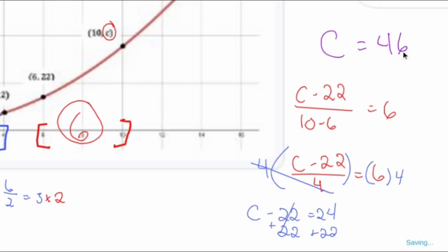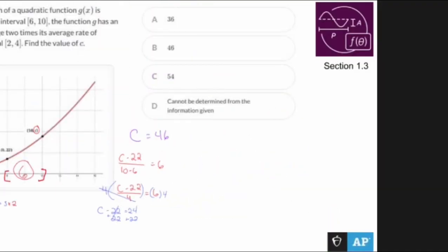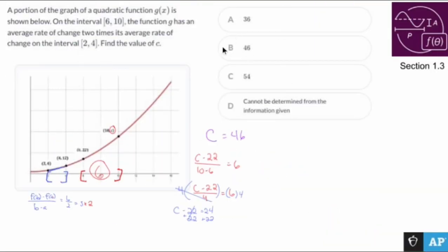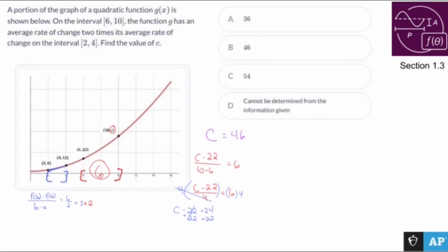Let me zoom back out, get everything on the screen. C is 46. Find the value of C—46 right there. Yeah, kind of a weird problem. Very weird indeed. This is the way I did it though. There's probably other ways, but this one would be considered on the difficult side, I suppose.